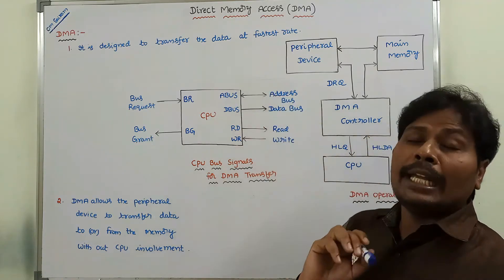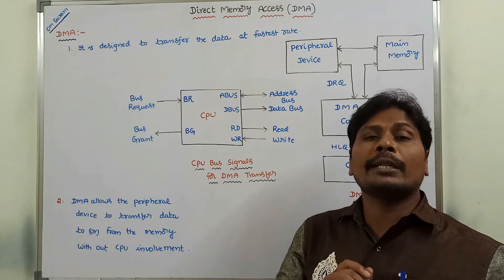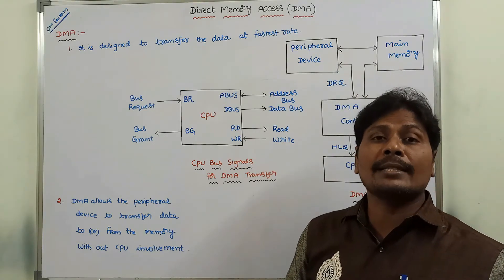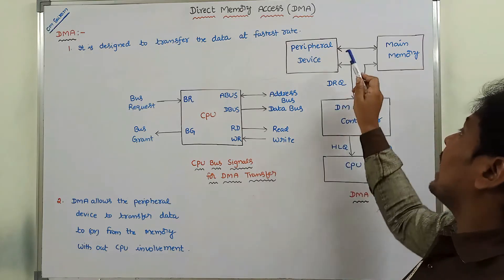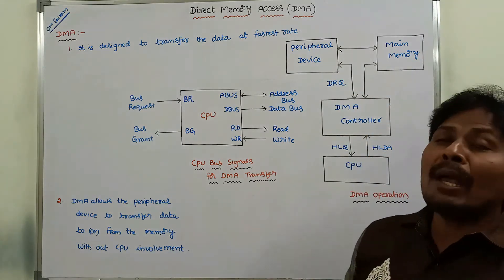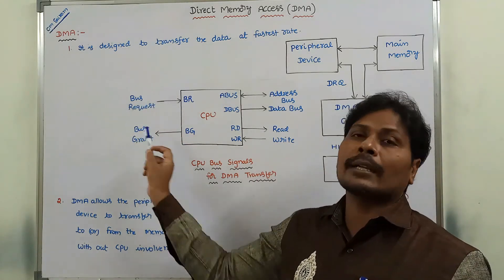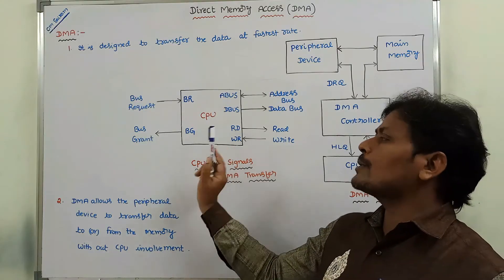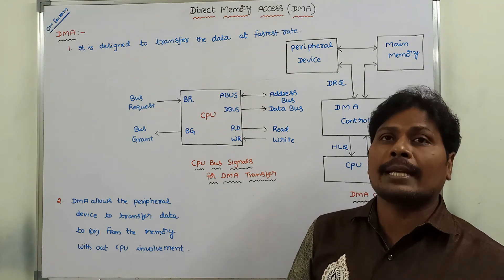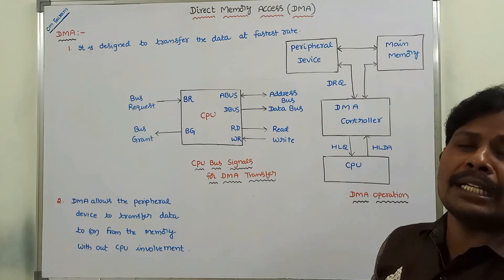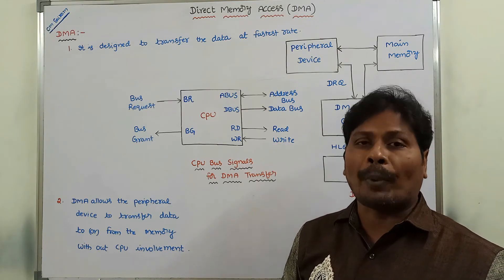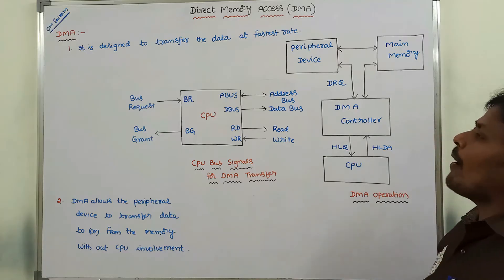Now, the DMA controller takes control over the memory buses and manages the data transfer operation between the peripheral devices and main memory. Once the data transfer operation is completed, the DMA controller disables the bus request line. After that, the CPU also disables the bus grant line and takes back control over the memory buses. Now, the CPU can return to its normal operation.